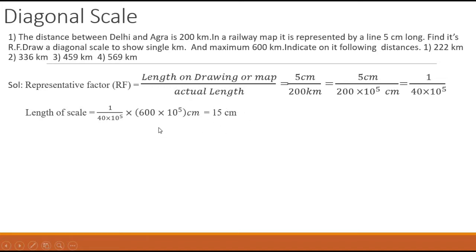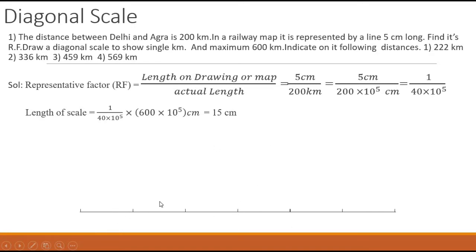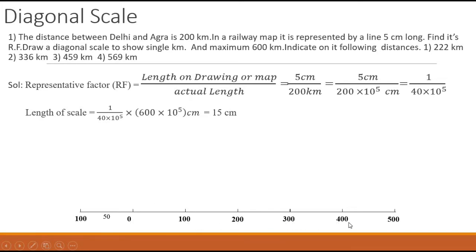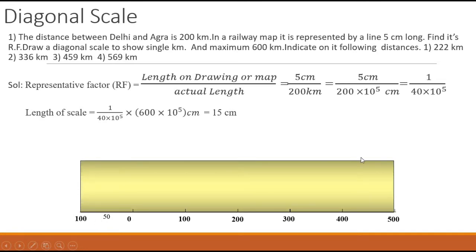This 15 centimeter line represents 600 kilometers. Now we will construct the scale. First, take a line of 15 centimeters — the length of the scale. Divide that into 6 equal parts, each part representing 100 kilometers. So we have 0, 100, 200, 300, 400, 500. The first part of this is just like plain scales. Now we will construct a rectangle. The height you can take any value — usually multiples of the subdivision of subdivision. We are going to divide this height into 10 parts.